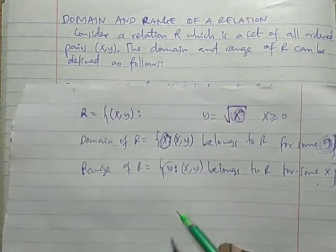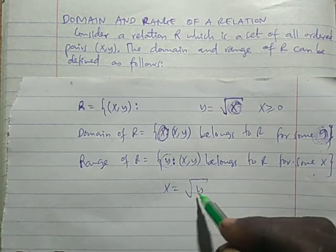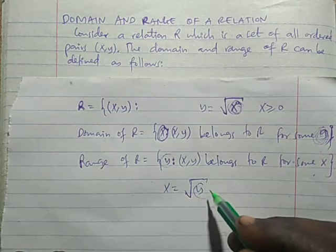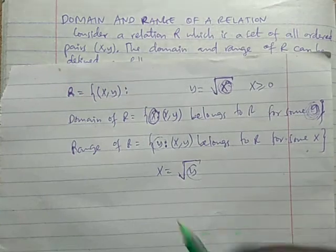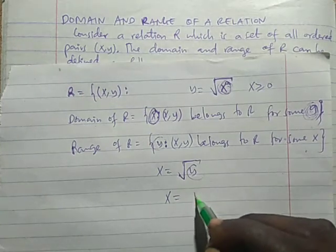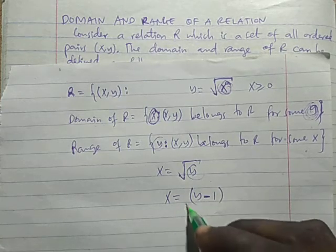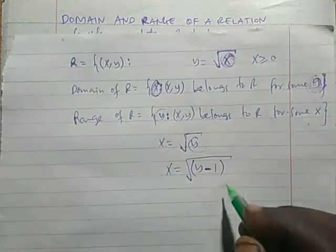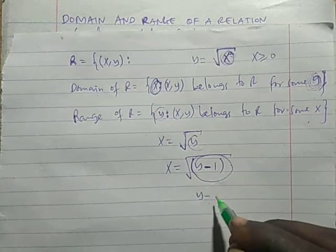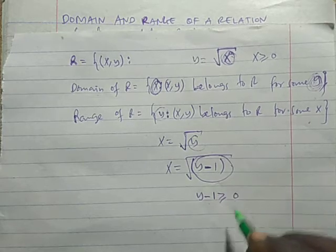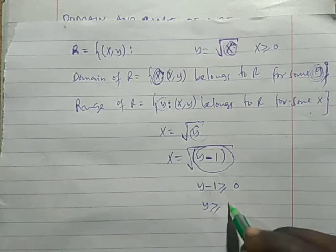For example, if you get X is equal to the square root of Y, then if Y is less than 0, hatuwezi kupata square root of a negative number. Or if you get X equal to the square root of Y minus 1, then Y minus 1 must be greater than or equal to 0, that is to say Y should be greater than or equal to 1.